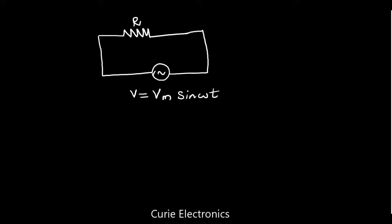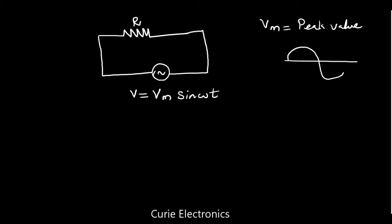Here Vm is the peak value of the waveform. If you have a waveform, this is the V peak, which we have mentioned as Vm. In the opposite direction, it is also Vm.